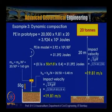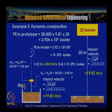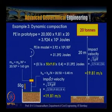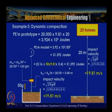Potential energy in the prototype = 20,000 kg × 9.81 × 20 m = 3.924 × 10⁶ J. Potential energy in the model = 3.924 × 10⁶ / 50³ = 31.39 J at 50 gravities. Mass of the tamper = 20,000 / 50³ = 0.16 kg (160 grams), dropped from a height of 20/50 = 0.4 m (40 cm).